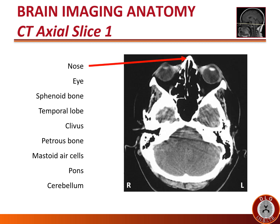I'm guessing you had minimal difficulty identifying the nose. The eyes also are not difficult to identify. Note the hyperdense or white oval-shaped structures in the anterior aspects of the eyes are the lenses.